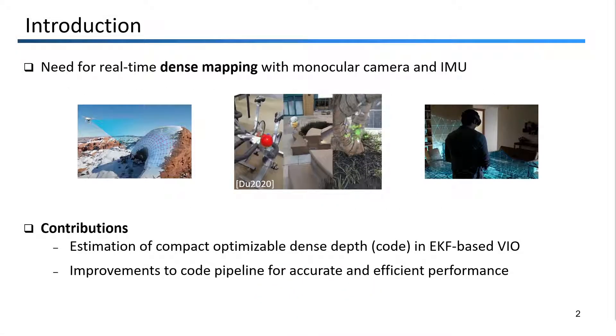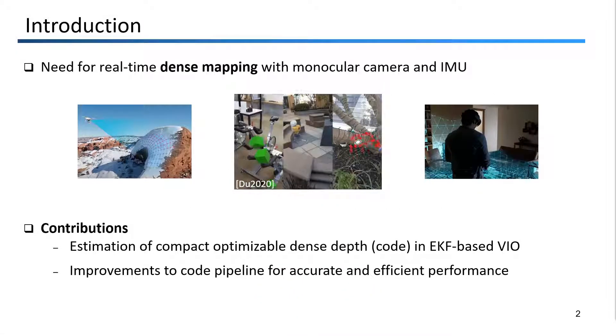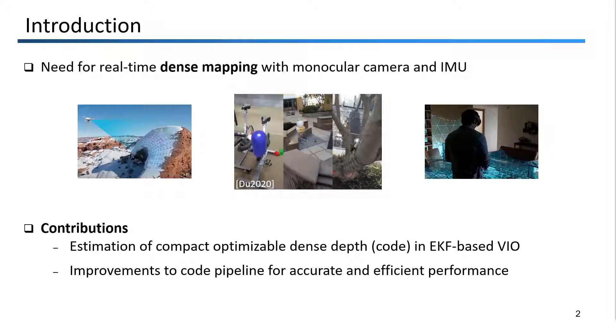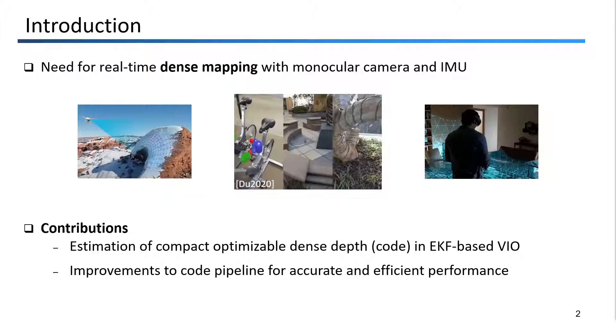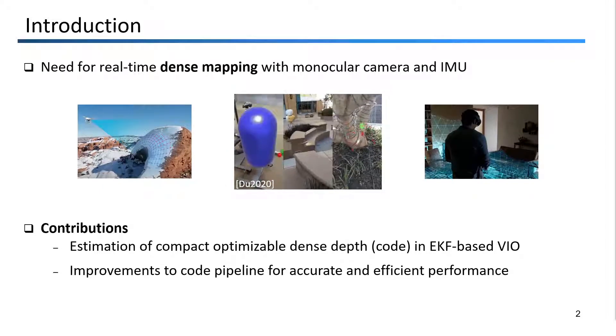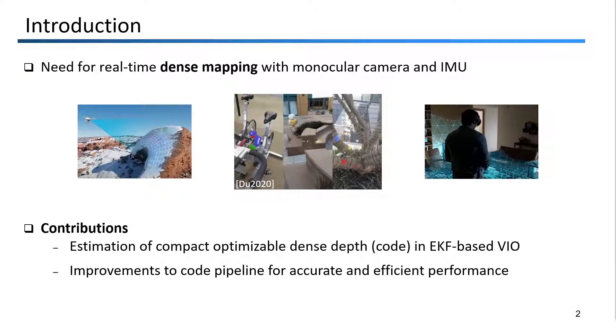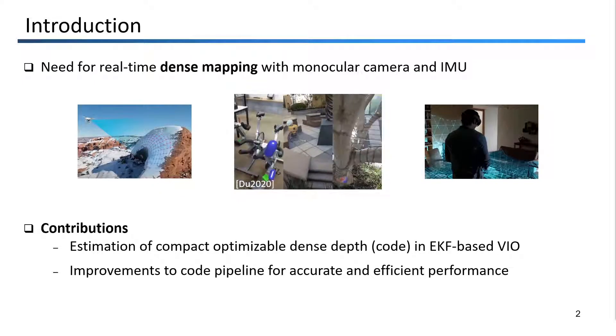In this work, we are tackling the problem of real-time dense mapping from a single camera and an inertial measurement unit, or IMU. More specifically, we want to jointly estimate the rigid body pose of the sensors, as well as a dense reconstruction of the immediate surroundings, all in real-time.